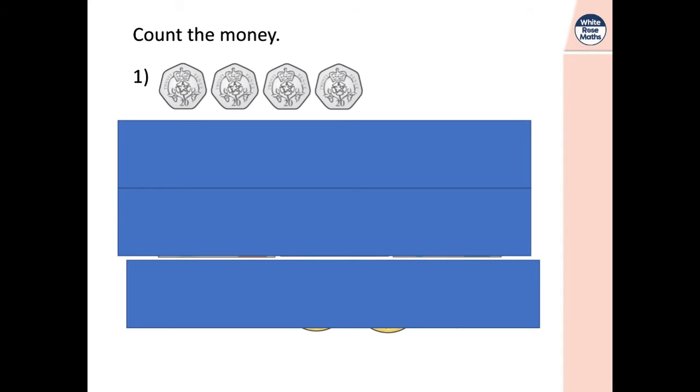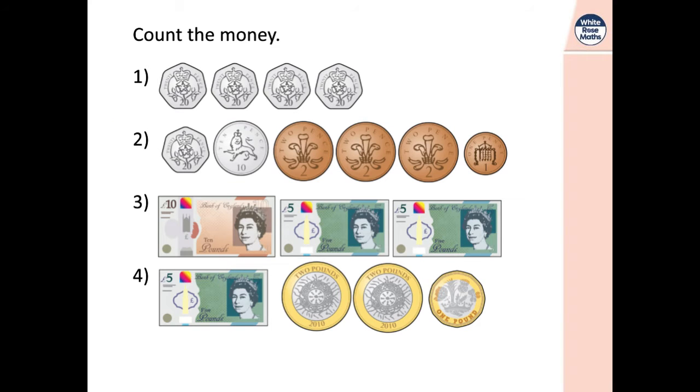Okay, first of all, have a go, look at the coins and work out how much money there is there. So each one of those, hopefully you can see, is a 20 pence piece. So write down what you think it is. Now have a go at this one. Oh, all three. So they all disappeared, sorry. So have a go at all four of these. Write down the amounts and we'll go through the answers in a second.